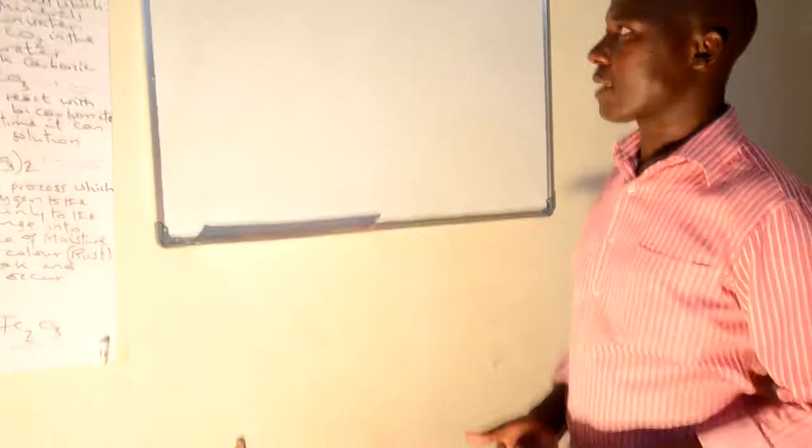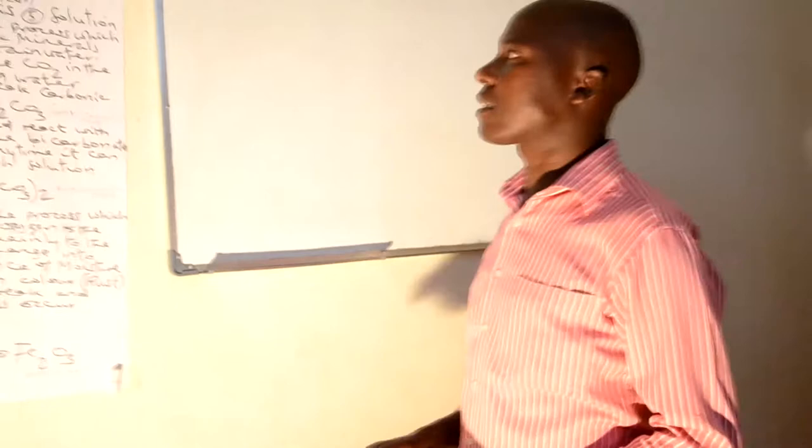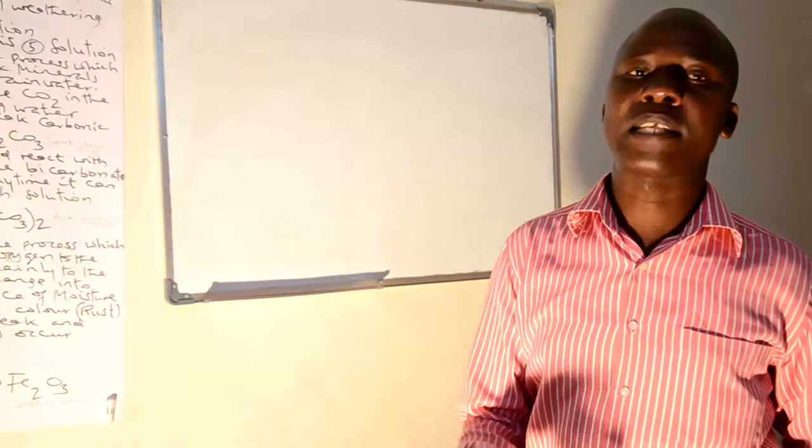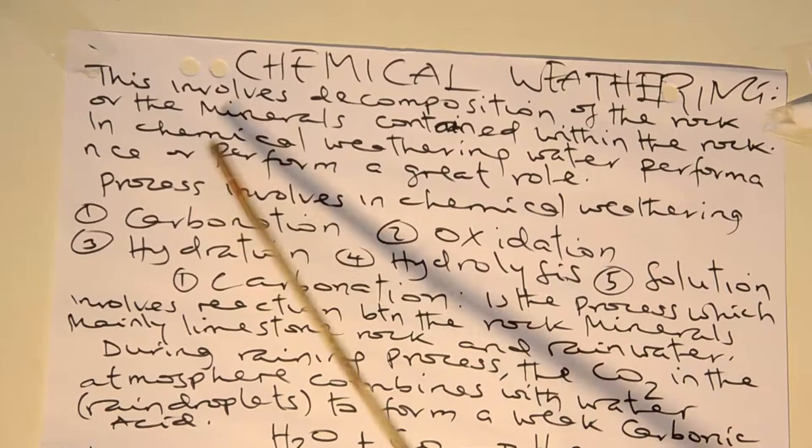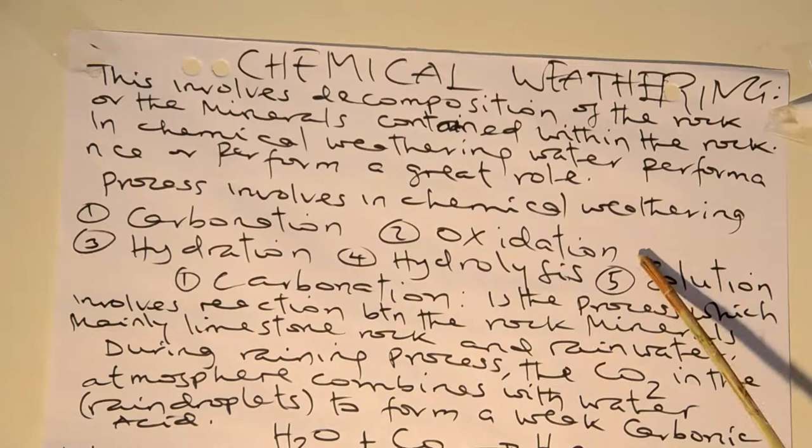As I told you, weathering can be physical, chemical, and biological. Physical is just influenced by temperature, but chemical is just influenced by water. Chemical weathering involves the decomposition of the rock or the minerals contained within the rock. In chemical weathering, water performs a great role. Wherever you want to know whether it occurs with water, the action can pass through different processes.